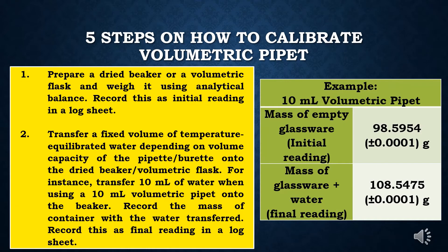Let us now go to the calibration of a volumetric pipette. Step 1: prepare a dried beaker or a volumetric flask and weigh it using an analytical balance; record this as the initial reading in a log sheet. Step 2: transfer a fixed volume of temperature-equilibrated water, depending on the volume capacity of the pipette, onto the dried beaker or volumetric flask. For instance, transfer 10 ml of water when using a 10 ml volumetric pipette onto the beaker.